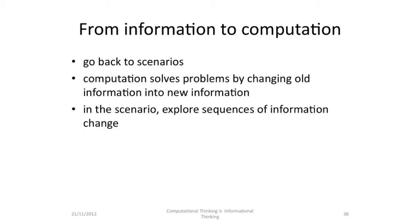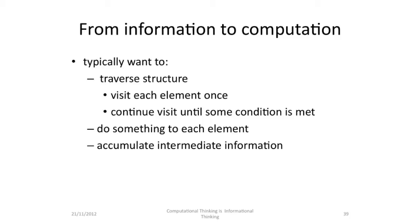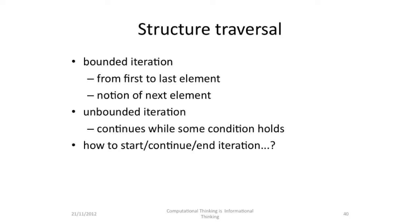We go back to the scenarios. A computation solves problems by changing old information into new information. You want to take a scenario and then think about the sequences of information change to get from the old information to the new information. Typically you want to traverse the structure — visit each element once, continue until some condition is met, doing something to each element and accumulating intermediate information. There are lots of different ways of traversing structures. We're very familiar with bounded iteration, where we start with the first element and go to the last element, and we have an idea of a next element. We've also got unbounded iteration, where we continue looking at the elements until some condition holds.